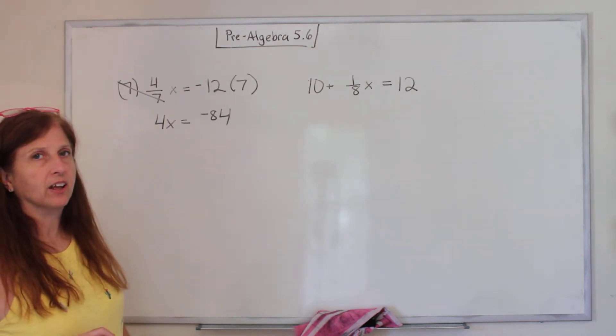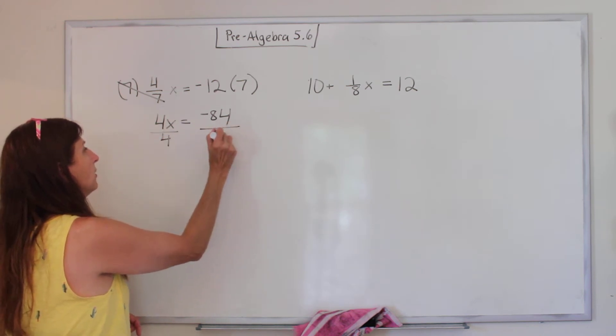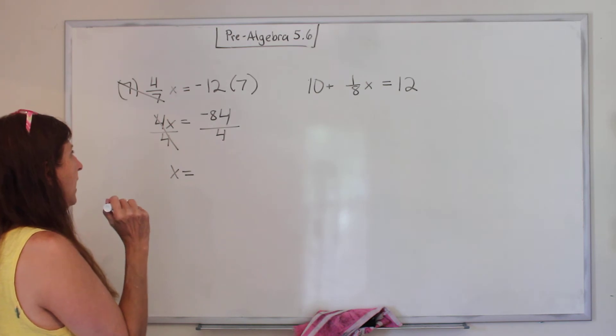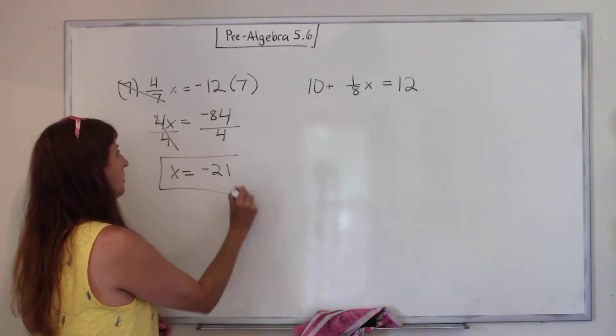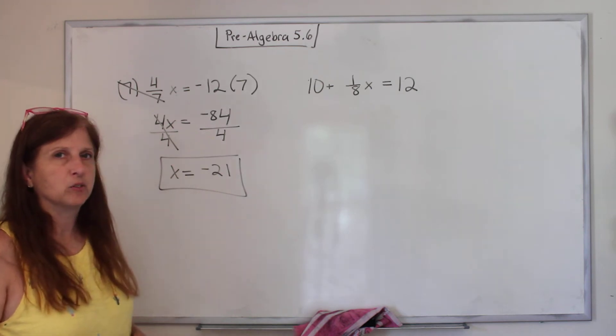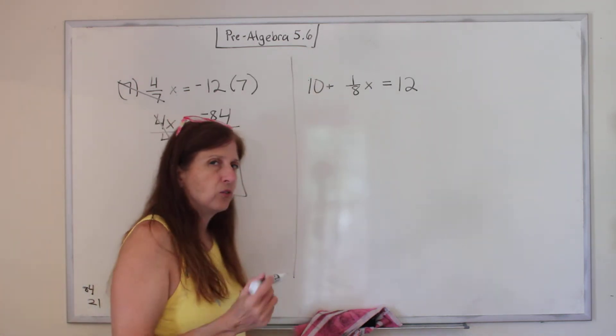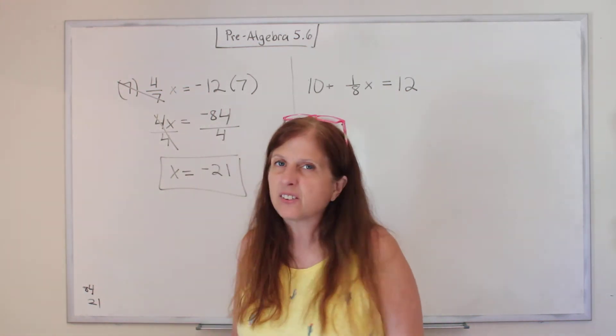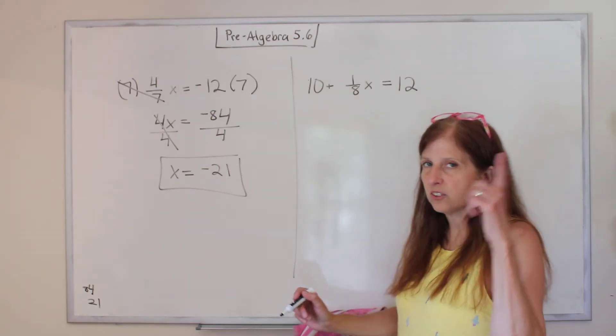So now x is being multiplied by 4. What's the opposite? Divide by 4. What do I do to one side? I do to the other. Those cancel out. And 84 divided by 4 is 21. So this is, don't forget your negative up there, negative 21. It used to drive me crazy when I was doing this for a grade in school and I would leave that negative behind and miss the problem just because I was careless and left a negative behind. So don't do that.